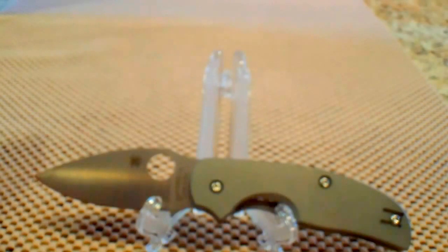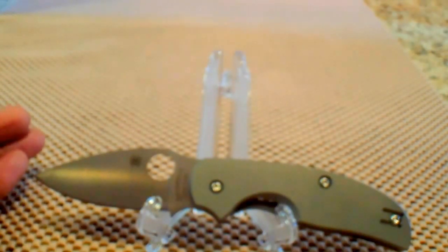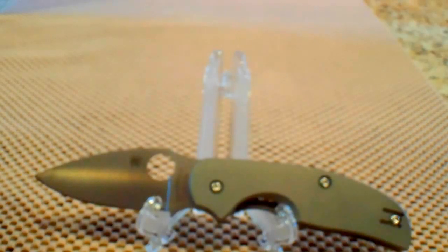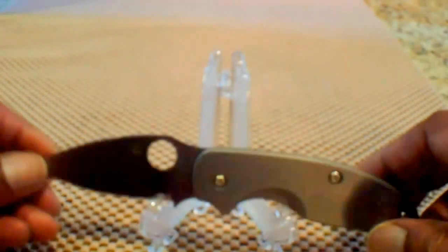The overall length of this piggy is 7.1 inches. The blade length is 3 inches, and that is the CPM S30V steel. The thickness of the blade itself is one-eighth of an inch.